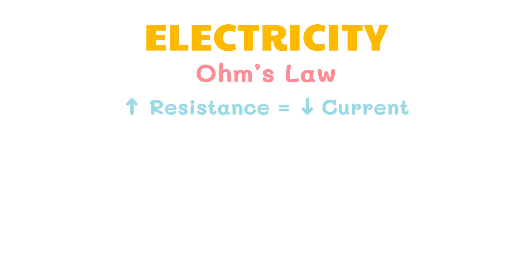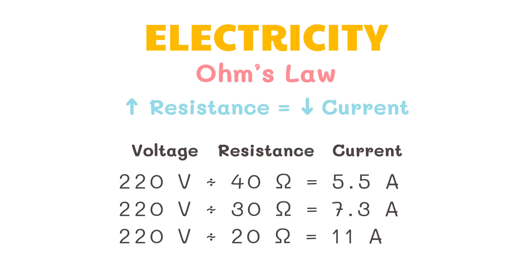Resistance and current are inversely proportional to each other. If we increase resistance, current decreases. For example, in these three equations, we have an increasing resistance with a constant voltage. As we increase the resistance, the current decreases. Thus, they are inversely proportional.